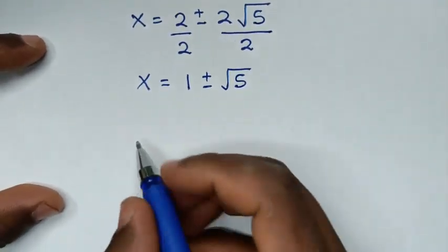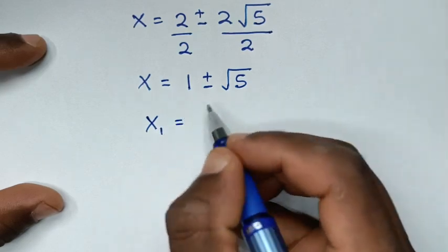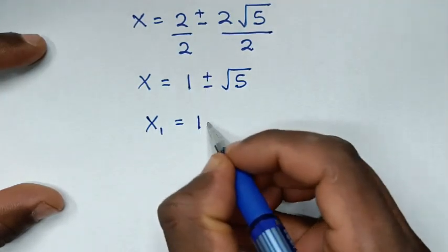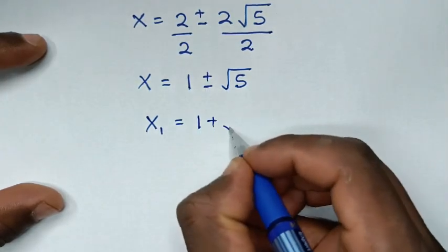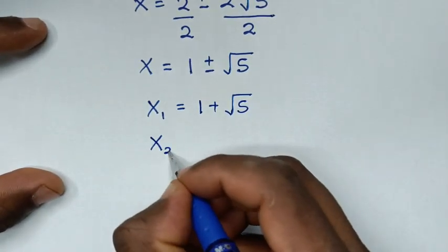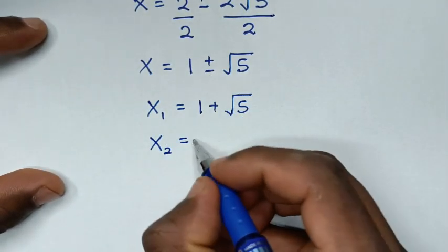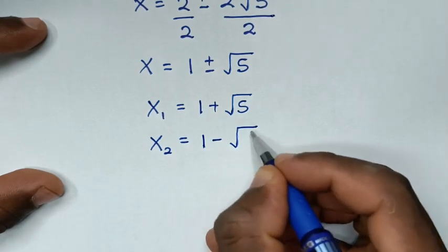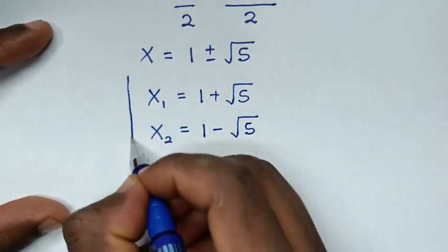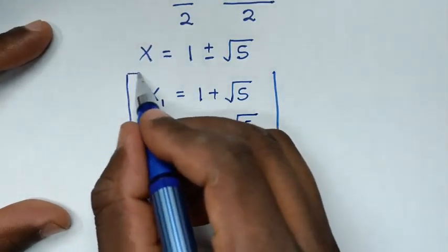Therefore we have two solutions: the first value of x is equal to 1 plus square root of 5, and the second value of x is equal to 1 minus square root of 5. So these are all the values of x in this problem.